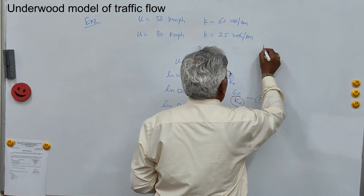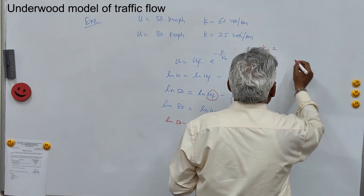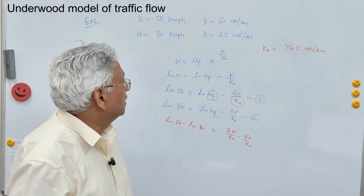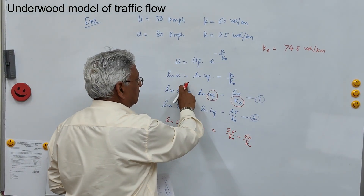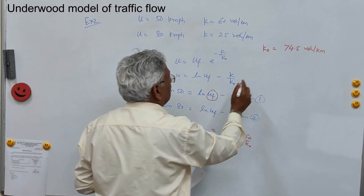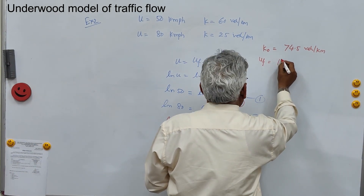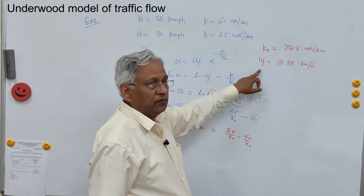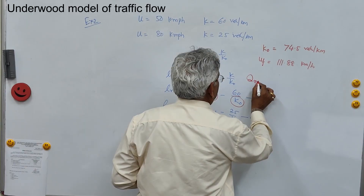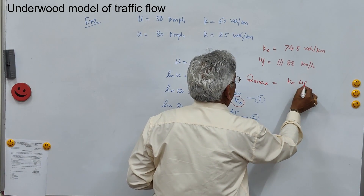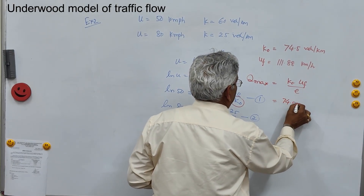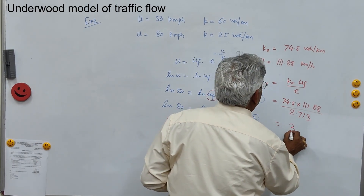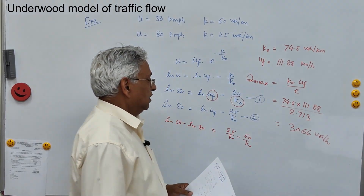K0 is 74.5 vehicles per kilometer — remember this is the density at capacity, at maximum flow. Substituting this value of k0 into either equation gives uf equals 111.88 km/h. Now knowing the optimum density and free flow speed, the capacity is q_max equals k0 times uf upon e, which is 74.5 times 111.88 divided by 2.713, giving 3066 vehicles per hour. That is the capacity of the section.